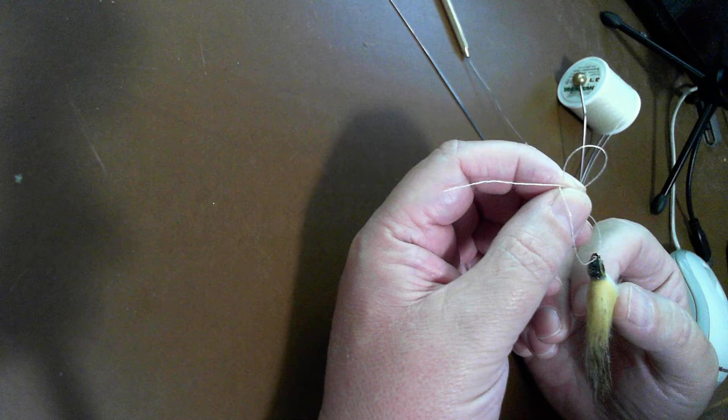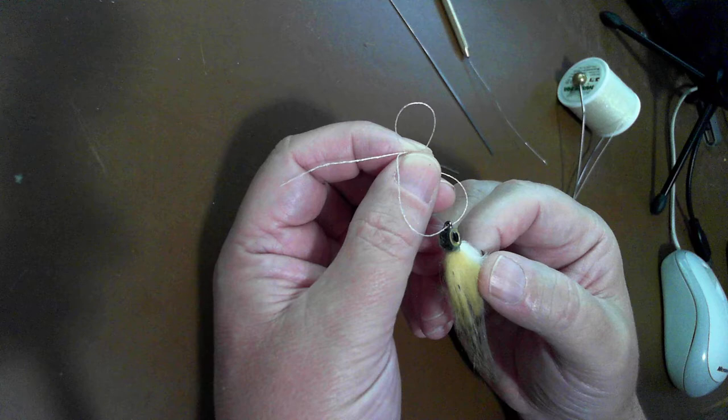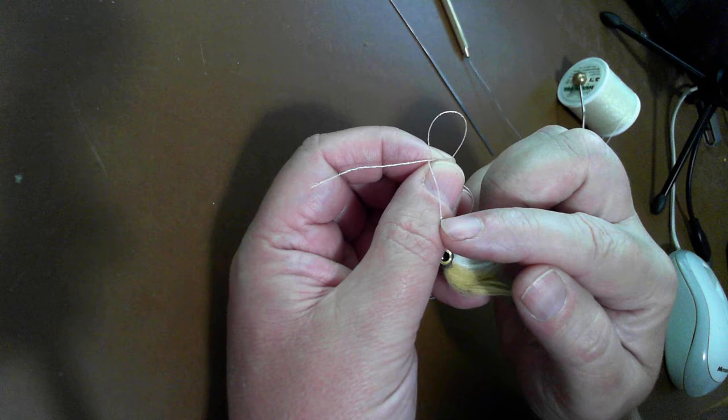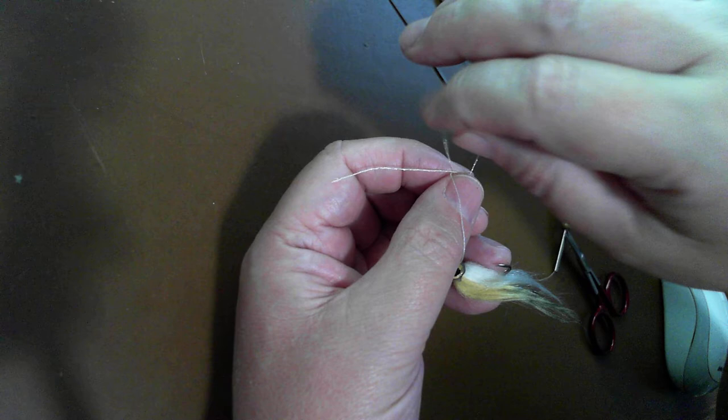Now if you tied it like this, this loop would be large and it would foul up on the material. So what you want to do is you want to make this larger loop smaller. You also want to make the smaller loop larger so you can bring the fly through it. And you do that by pulling on the left side of the loop.